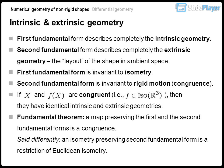If two shapes are congruent, they have identical intrinsic and extrinsic geometries. Fundamental theorem: a map preserving the first and the second fundamental forms is a congruence. Said differently, an isometry preserving the second fundamental form is a restriction of Euclidean isometry.